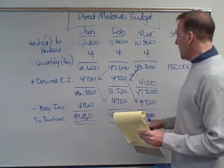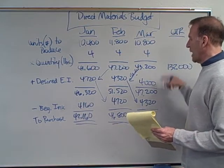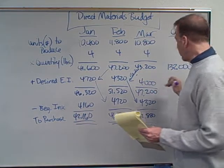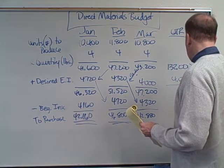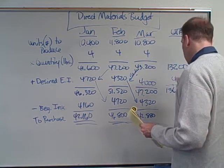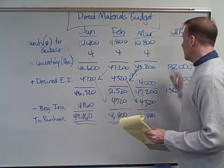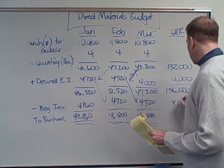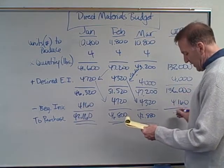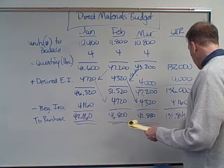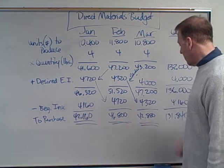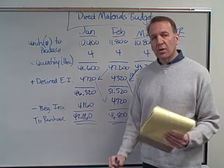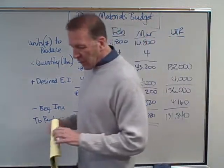For the quarter total, the desired ending inventory is the ending inventory of the last month — 4,000. Adding that gives 136,000. Then subtract the beginning inventory for the quarter, which is January's beginning inventory of 4,160. That gives us 131,840 pounds for the quarter — which matches adding up the three monthly purchase totals: 42,160 plus 46,800 plus 42,880 equals 131,840.